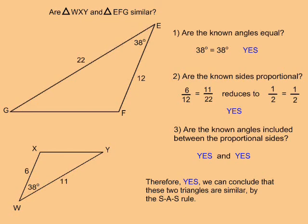Question 2 says, are the known sides proportional? If I put the shorter known side from the smaller triangle over the shorter known side from the larger, and put the longer known side from the smaller triangle over the longer known side from the larger, I get 6 over 12 and 11 over 22.